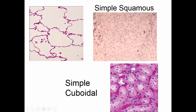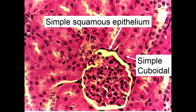Here we have some simple cuboidal epithelium. The cells are more box-like. There's only a single layer, and you can see how these cells are lining a tube, and these cells were covering a surface. Here's another example of a simple squamous epithelium lining a tube — you see that fried egg appearance with the nucleus and the cytoplasm. And then here we see some simple cuboidal cells, those box-like cells, a single layer, again lining a tube.